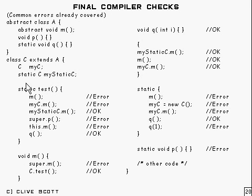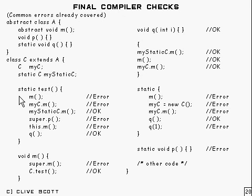What if you try and go through a variable? Well, that's an error as well, because you can't get myC that way, because it's an instance variable. If you want to do it, you can do it this way though, because that's a static variable, so that's available from this static context.